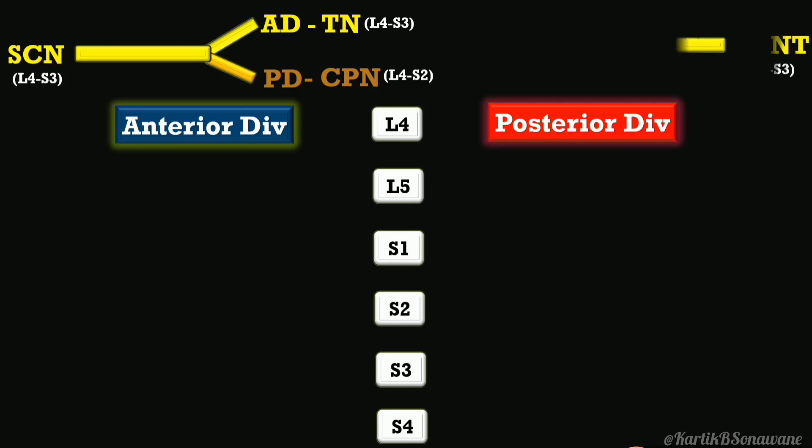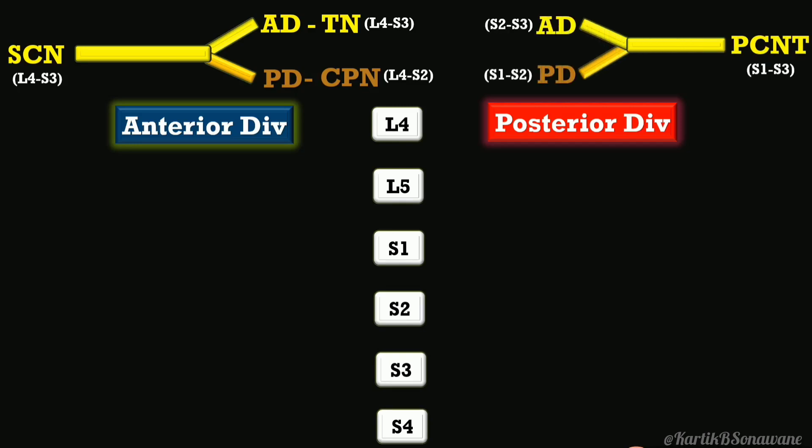The second major branch is the posterior cutaneous nerve of the thigh, with root value S1 to S3. Its anterior division components include S2 and S3, and its posterior division components include S1 and S2.